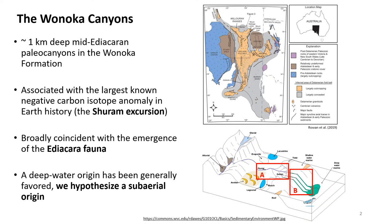My research focuses on the Wanaka Canyons, which are these remarkable roughly one-kilometer-deep paleo canyons exposed in outcrop across the Flinders Ranges. They are of interest because they're associated with the largest known negative carbon isotope anomaly in Earth history, called the Shuram excursion, and they're also broadly coincident with the emergence of the Ediacaran fauna, so understanding the origin of the Wanaka Canyons could have implications for both of these.